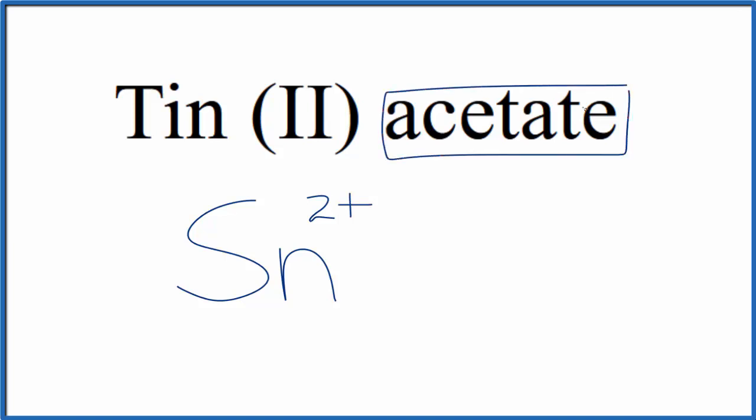Acetate - you're not going to find acetate on the periodic table, it ends in A-T-E. So it's a polyatomic ion, and you either memorize that the acetate ion is CH3COO,